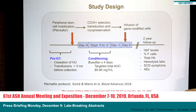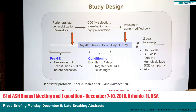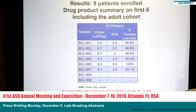This is the study design. We mobilized peripheral stem cells using an agent called plerixafor, isolate CD34 cells, take them to the GMP facility, and transduce them with a recombinant lentivirus vector expressing the shmiR. After the release criteria of this GMP product, the patient is admitted and conditioned with busulfan, and then the new cells are infused. We've now enrolled nine patients on our study and developed a drug product for six, including the entire adult cohort shown here.